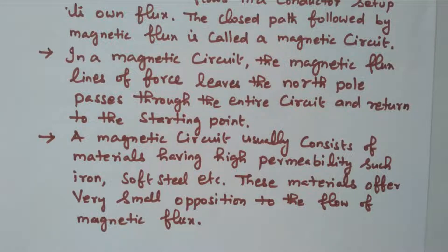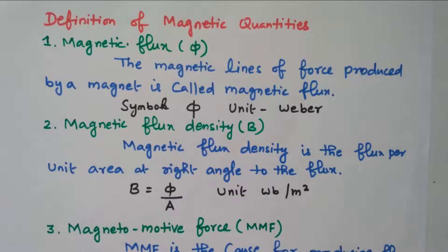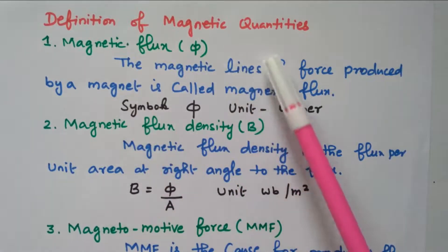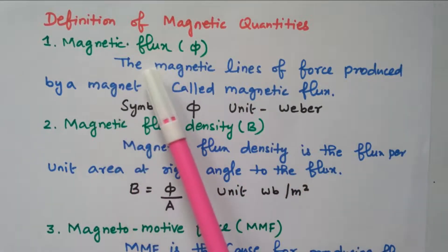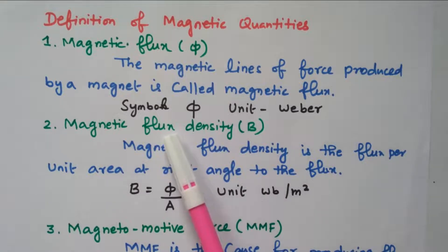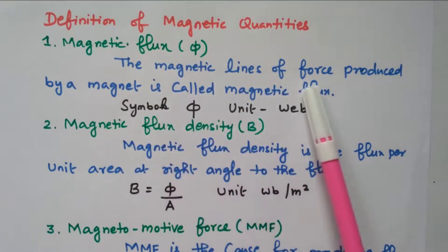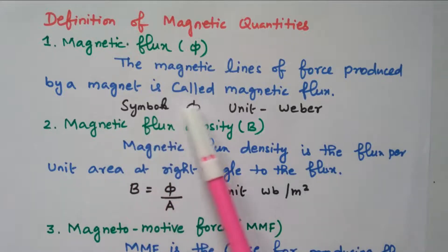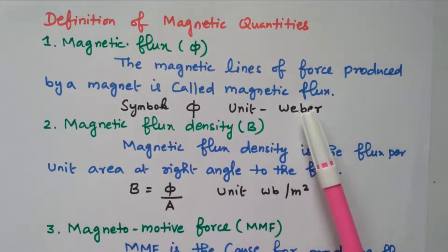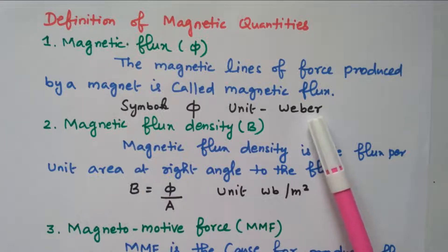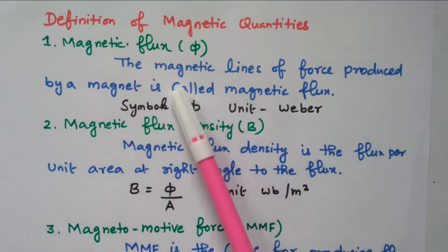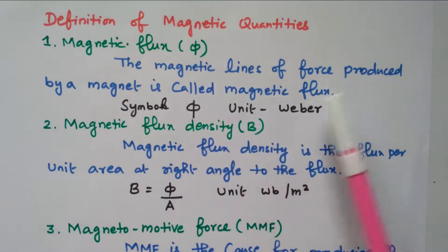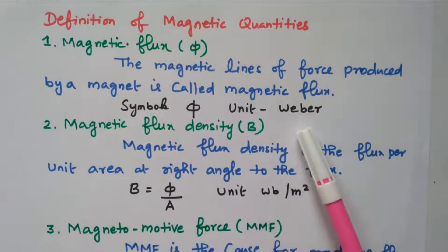Now we will go to the definition of magnetic quantities. The first one is magnetic flux. The magnetic lines of force produced by a magnet are called magnetic flux. The dotted lines available in the diagram represent the magnetic flux flowing through the core along path ABCDA. The symbol is φ (phi) and the unit is Weber.